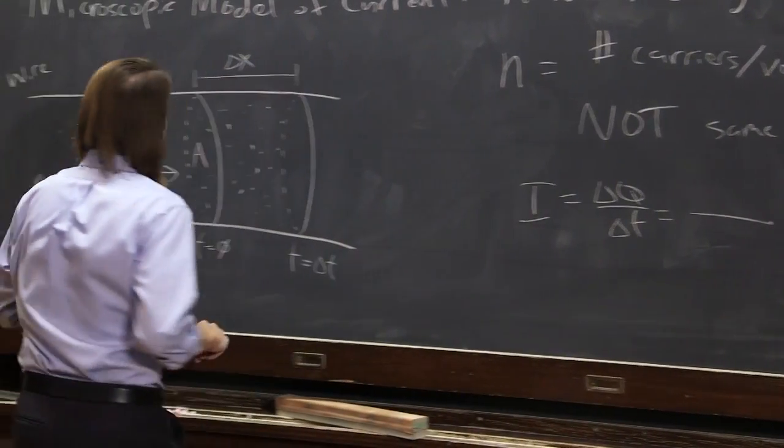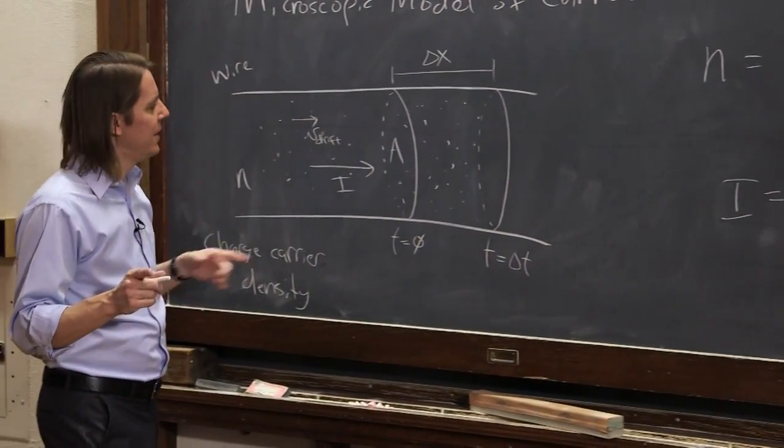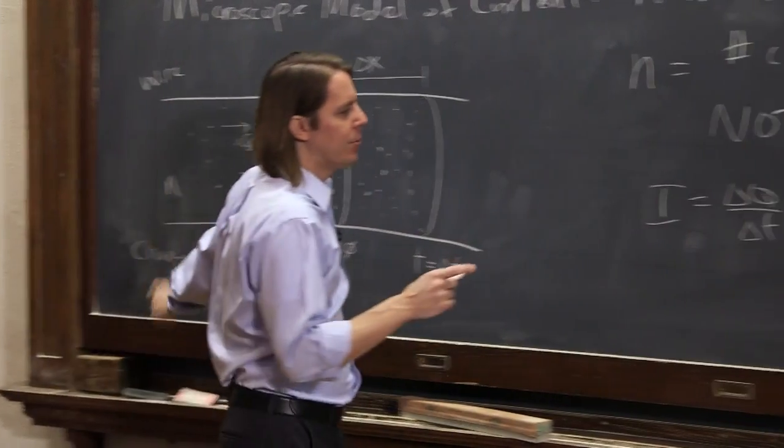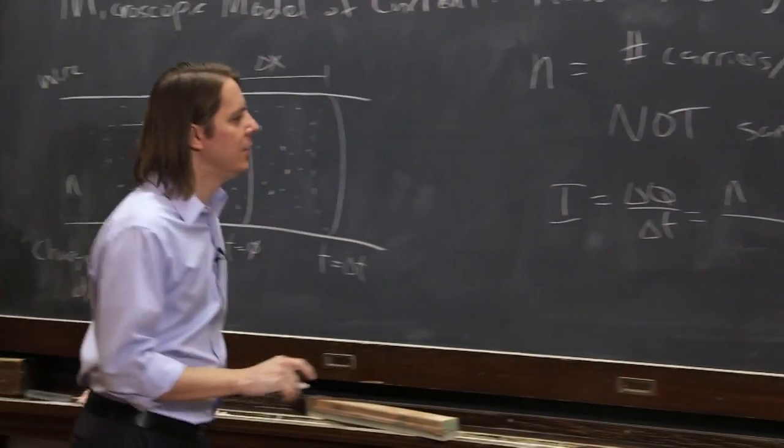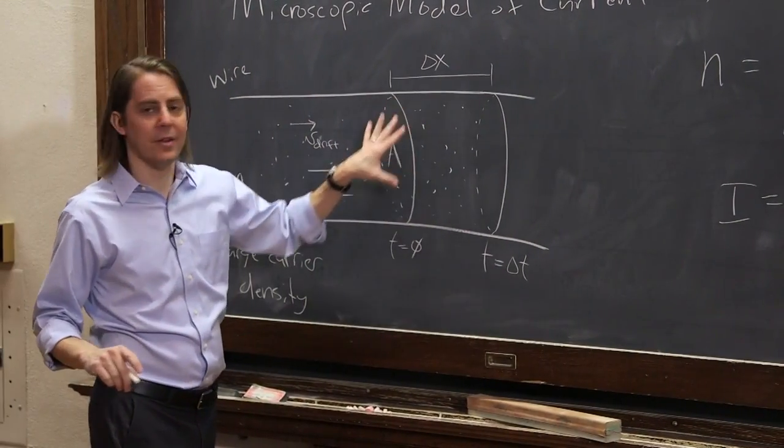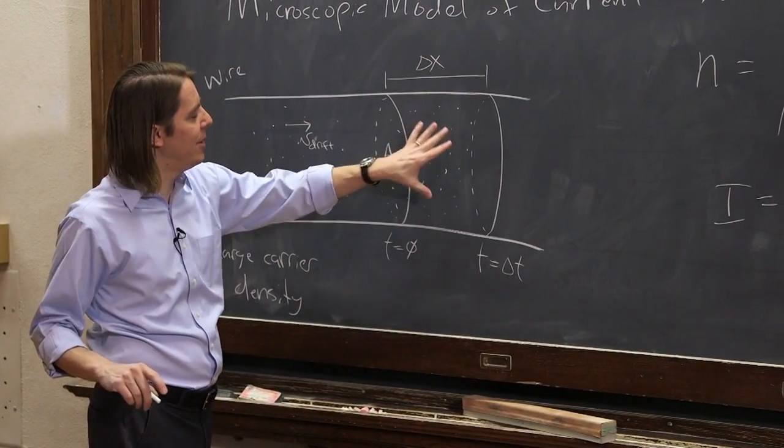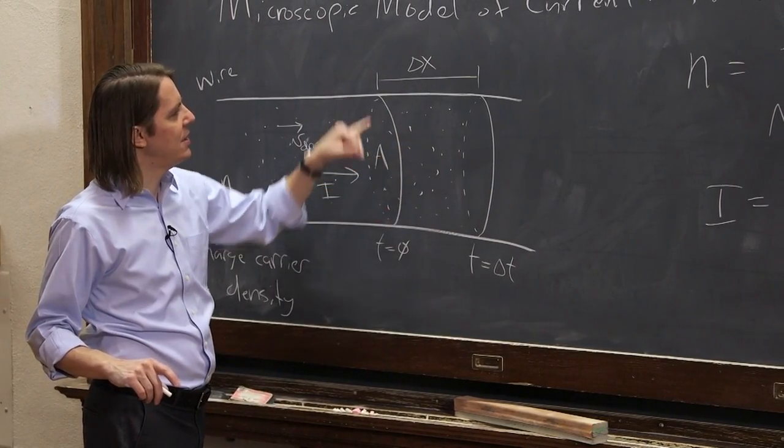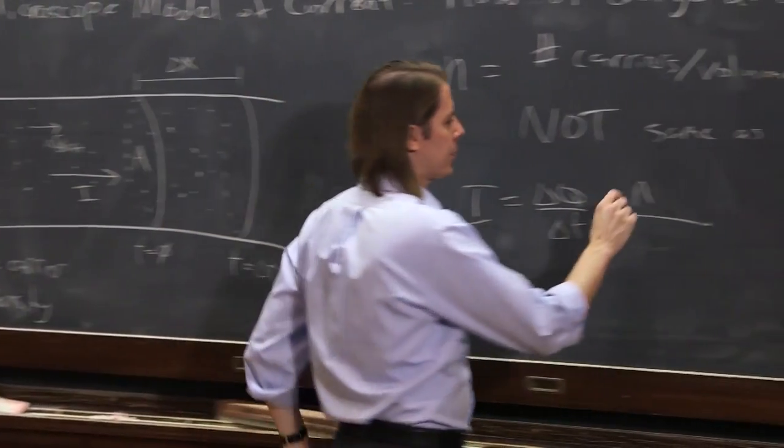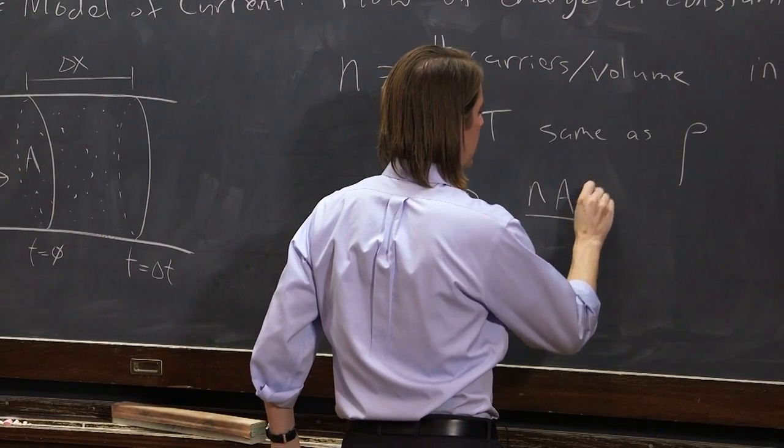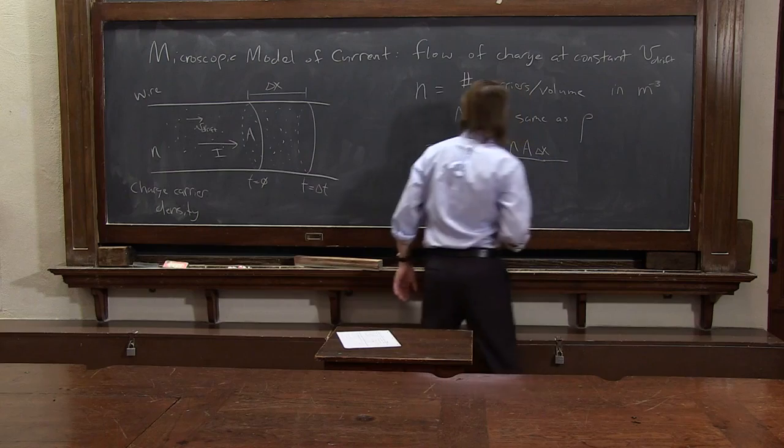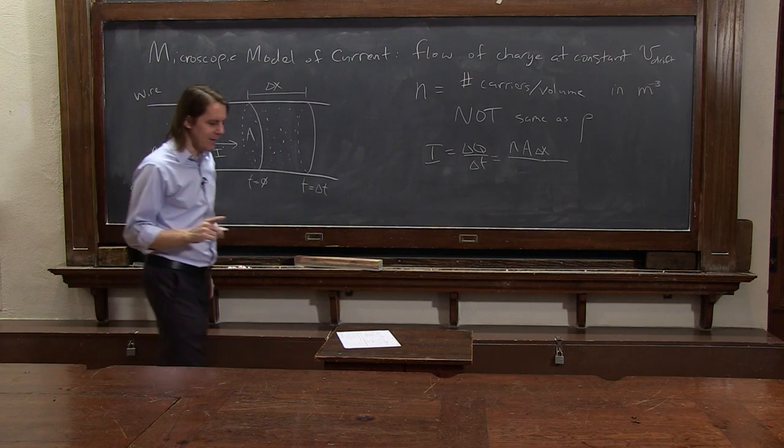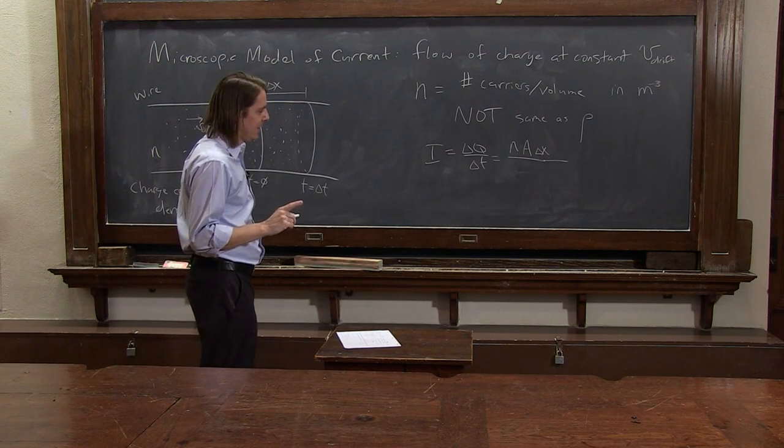So the amount of charge is what? It's the density of charge carriers, number of charge carriers per unit volume, n times the volume of this thing. This is how many flowed by in delta t. So the volume of this is a times delta x. So a is the end cap and delta x is the length. And that is not yet the charge. That is the number.